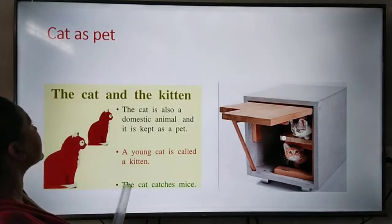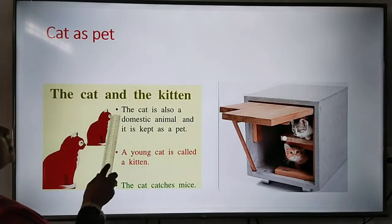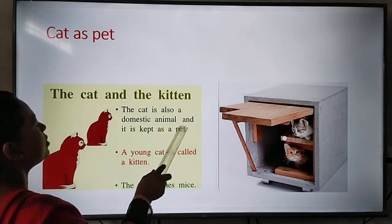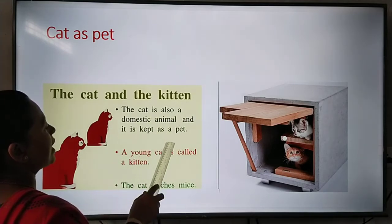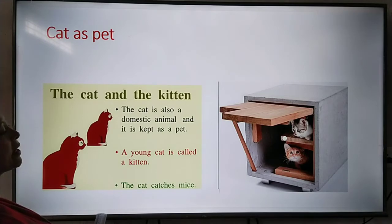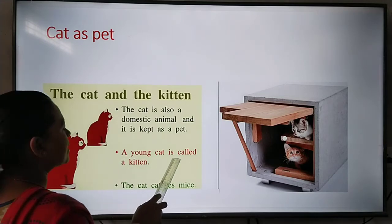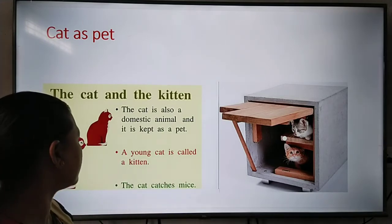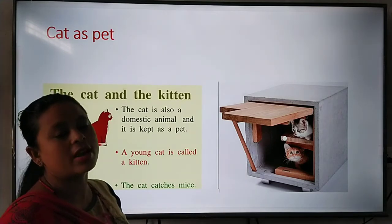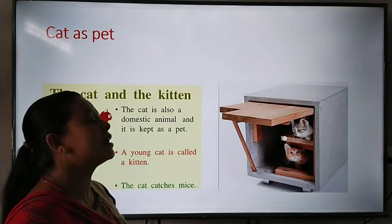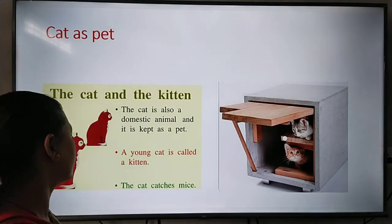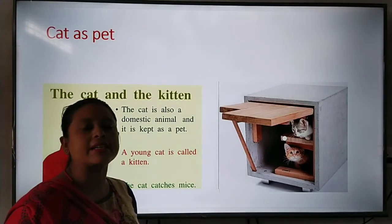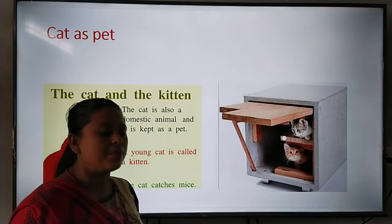Now cat as pet. The cat is also a domestic animal and it is kept as a pet. A young cat is called a kitten. The cat catches mice.